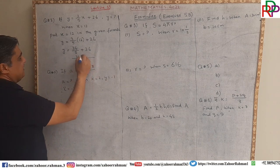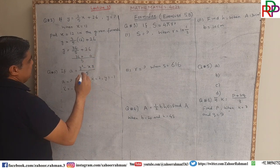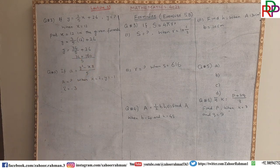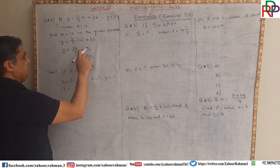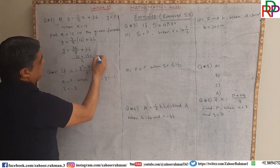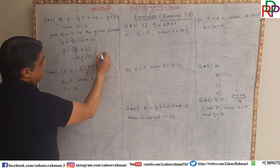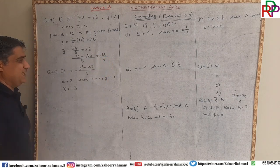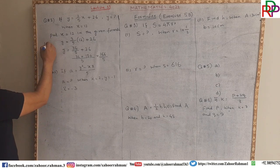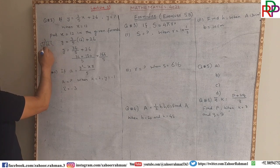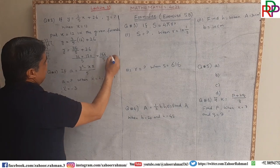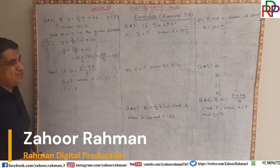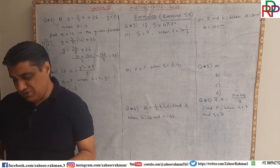We simplify: 12 times 3 is 36 divided by 5 plus 26. Taking 5 as the LCM, 26 multiplied by 5 gives 130. So we get 166 divided by 5. When 166 is divided by 5, we get 33 whole 1 over 5 as the ultimate result.